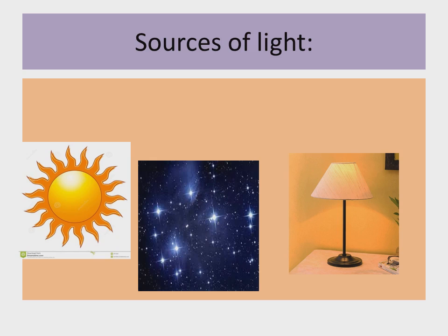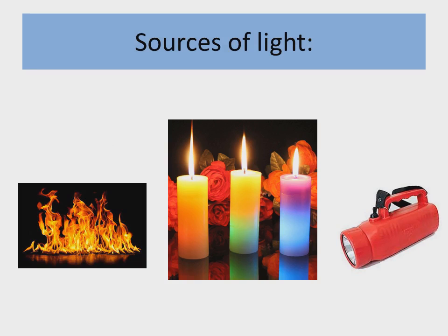You can see on your screen there are other sources of light: sun, stars, and lamp. On another screen you can see more sources of light: fire, candles, and torch. These are all sources of light. Candles give light too. When there is no electricity or a very dark area, we use torch and fire, which also give light.